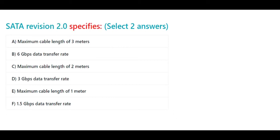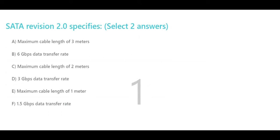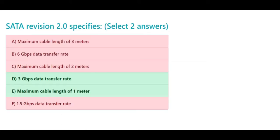SATA Revision 2.0 specifies — select 2 answers: a. maximum cable length of 3 meters, b. 6 Gbps data transfer rate, c. maximum cable length of 2 meters, d. 3 Gbps data transfer rate, e. maximum cable length of 1 meter, f. 1.5 Gbps data transfer rate. The correct answers are d. 3 Gbps data transfer rate and e. maximum cable length of 1 meter.